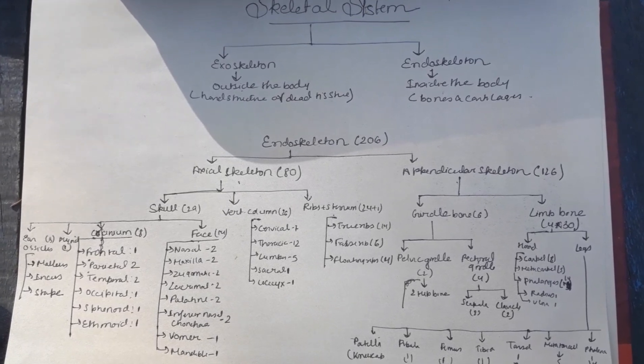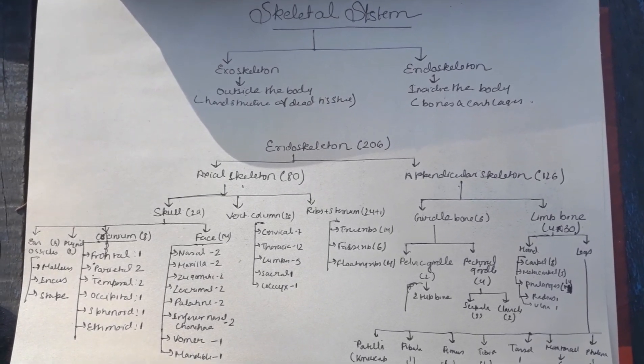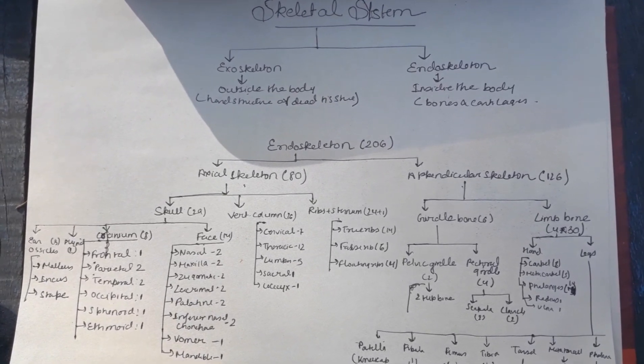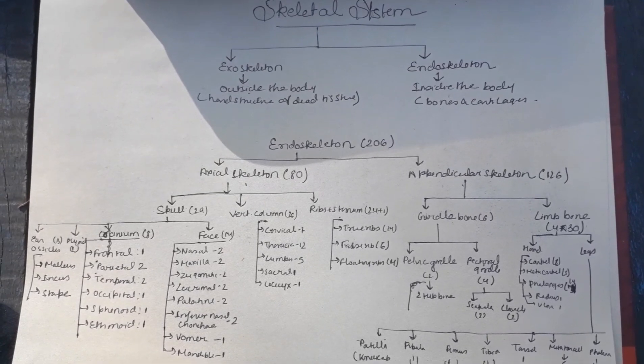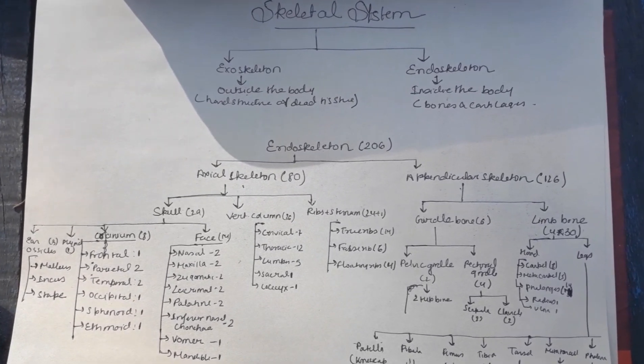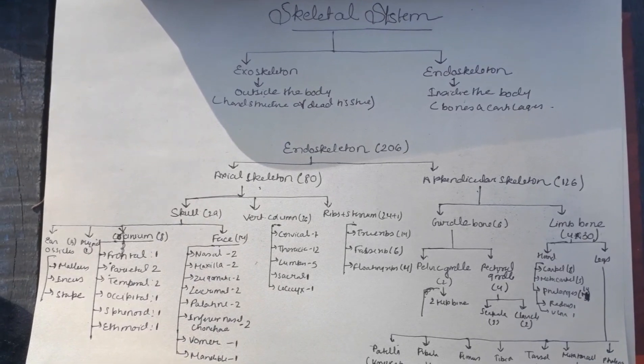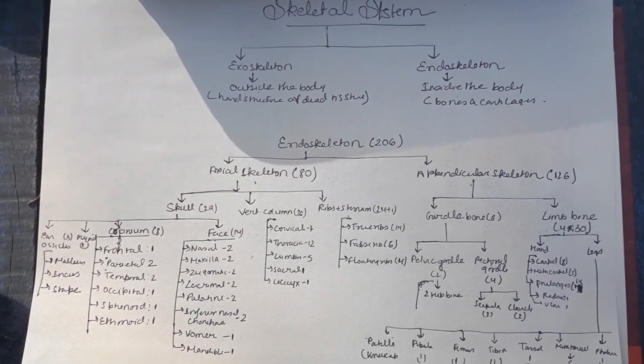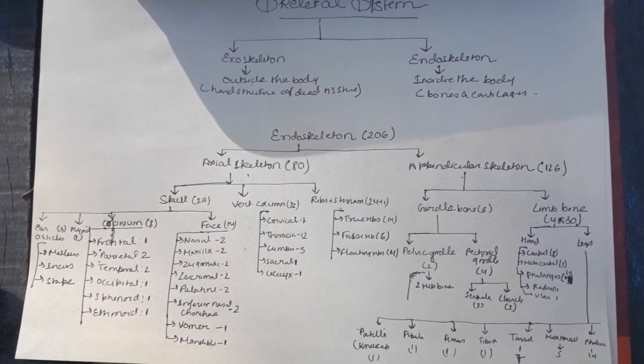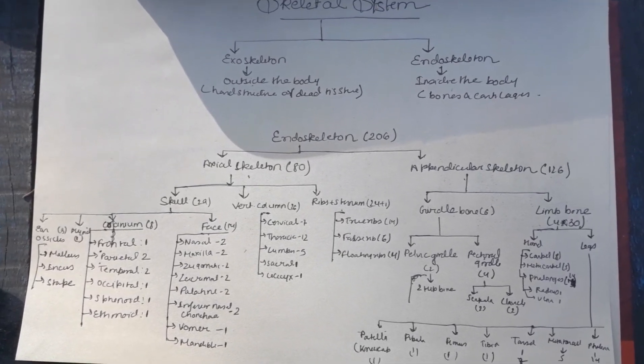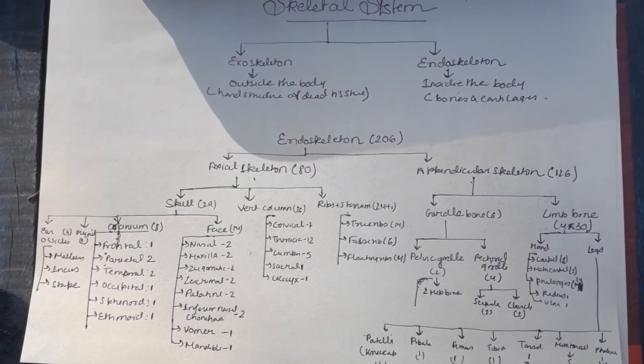So we all know that our human body consists of a total of 206 bones. We will go through this endoskeleton, which is present inside our body and includes all 206 bones.